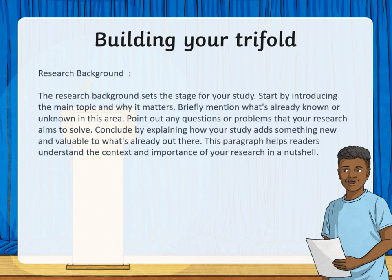Then, we have the research background. The research background sets the stage for your study. Start by introducing the main topic and why it matters. Briefly mention what's already known or unknown in this area, and point out any questions or problems that your research aims to solve. Conclude by explaining how your study adds something new and valuable to what's already out there. This paragraph helps readers understand the context and importance of your research in a nutshell.